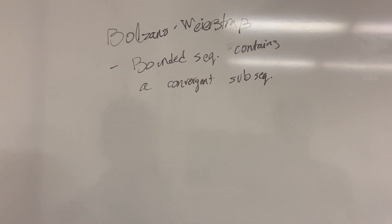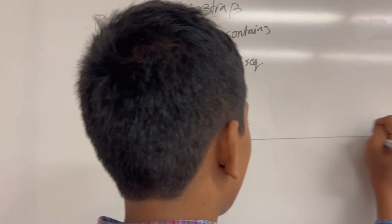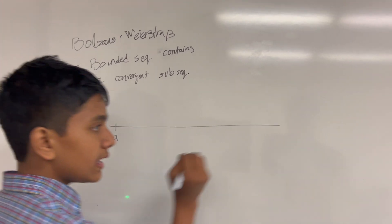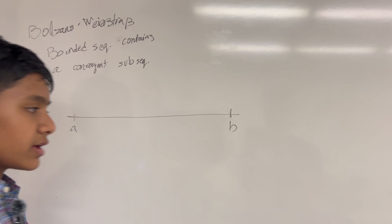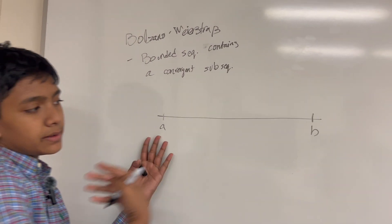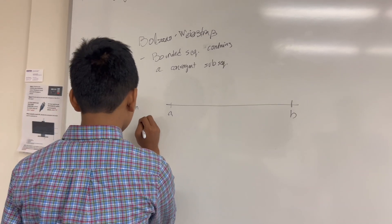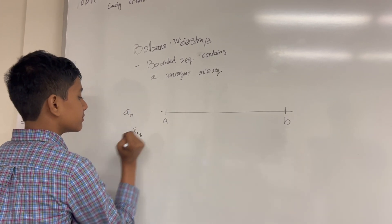So let's look at how we might go about this. Bounded just means there's a lower bound less than every element and an upper bound greater than every element. So we just have a and b to represent those. And our sequence is just a_n. And our subsequence is a_{n_k}.